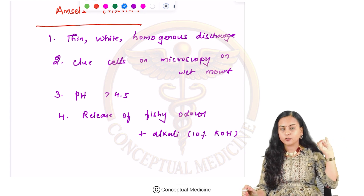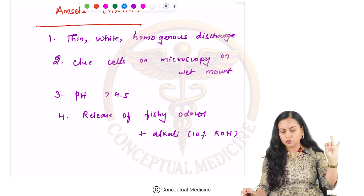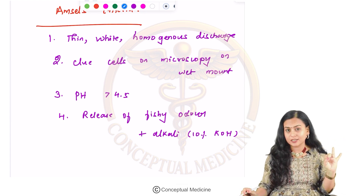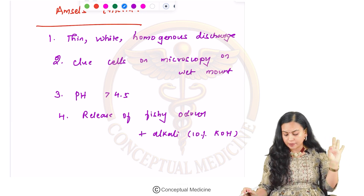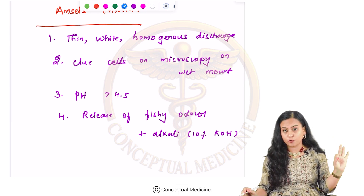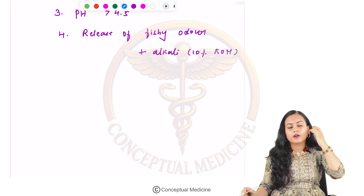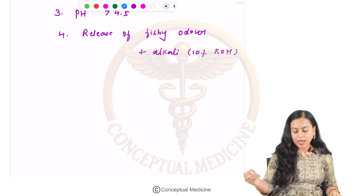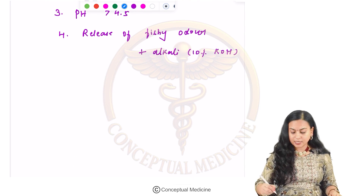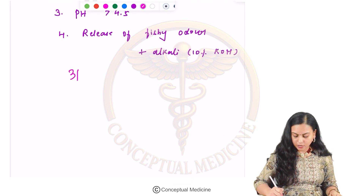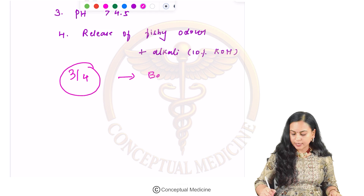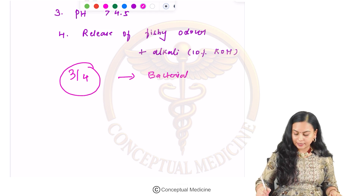To summarize Amsel's criteria: number one is thin white homogenous discharge, number two is clue cells on wet mount microscopy, number three is pH more than 4.5, and number four is release of fishy odor on addition of alkali like 10% potassium hydroxide. If you get three out of four components, you can give a diagnosis of bacterial vaginosis.